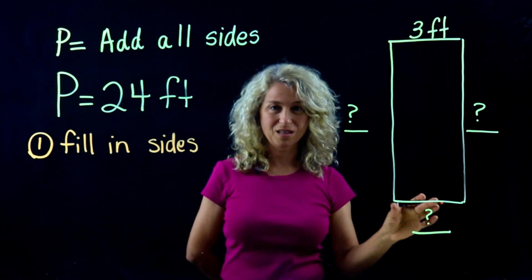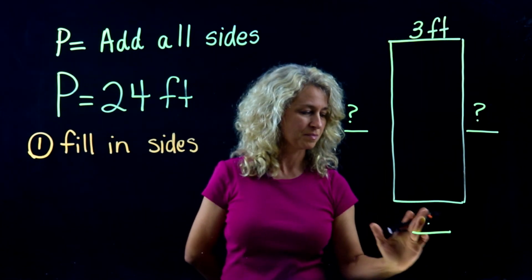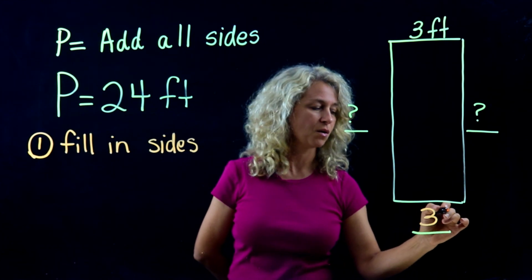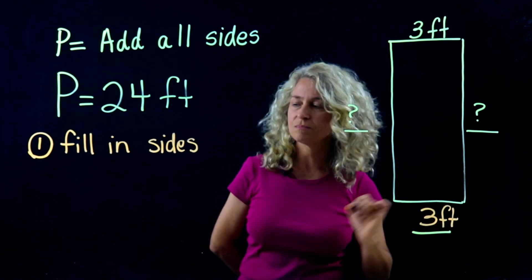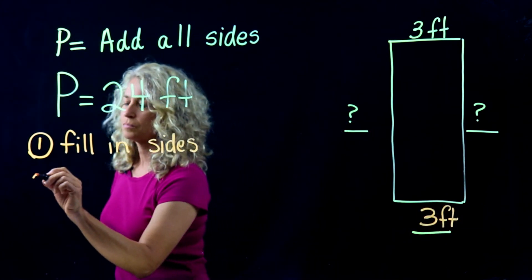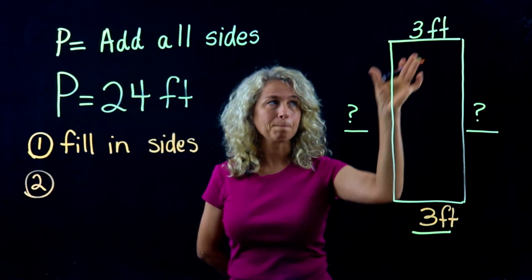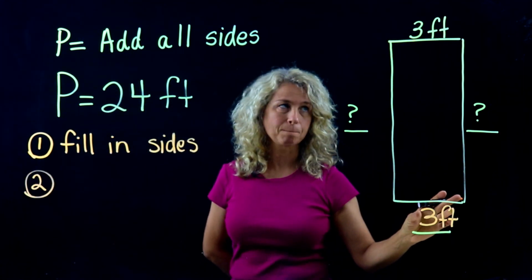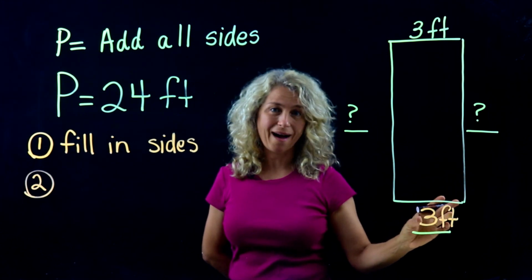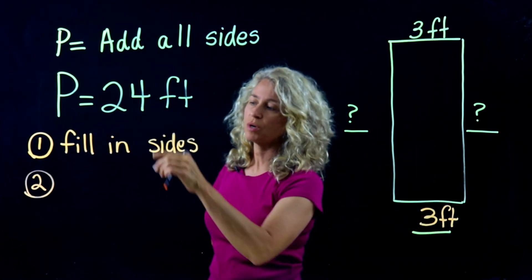If this side is 3, we know this side is also 3 feet. So we're going to put a 3 right here. Number two: we're going to add the known sides together and then subtract that from 24.